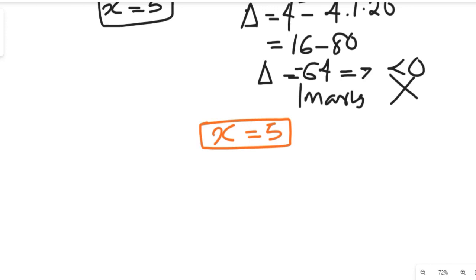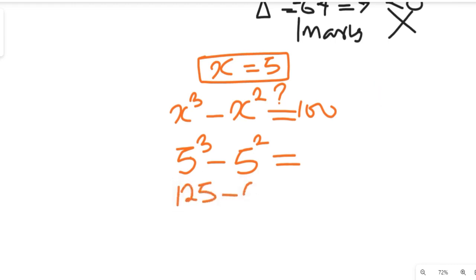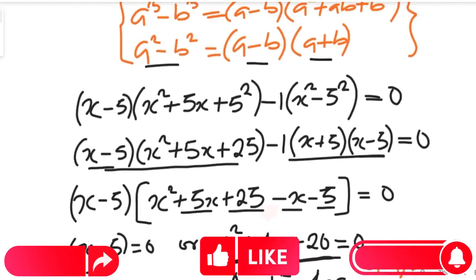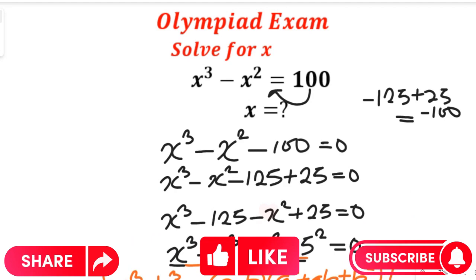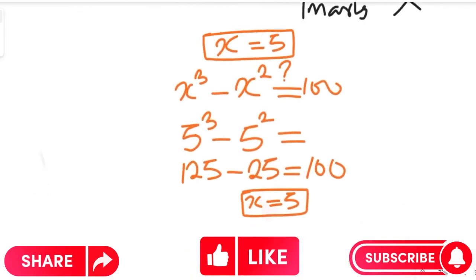Now let's verify this is correct. Recall the original question: x to the power of 3 minus x to the power of 2. Will x equals 5 give us 100? Let's check: 5 to the power of 3 minus 5 to the power of 2 equals 125 minus 25, which equals 100. This confirms that x equals 5 is the solution that satisfies the equation. So this question may look complex, but we've shown how to solve it comfortably using algebraic formulas to arrive at a very reasonable solution.